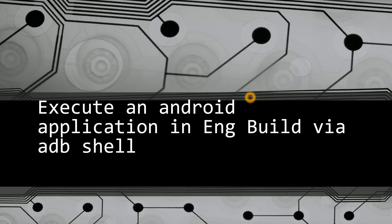Welcome to today's session on Android framework components. Today we will see how to push an APK into an engineering build. If we want to install a particular APK on the user build, we have to sign that APK with release keys, platform keys, or product keys. For development and testing purposes, there are certain steps to execute that APK in an engineering build.